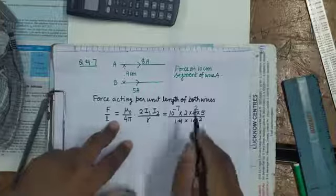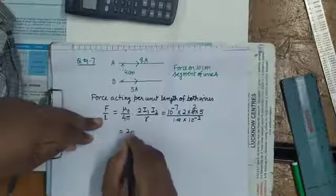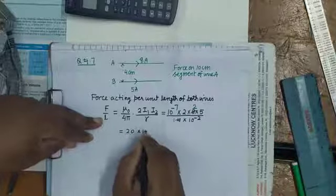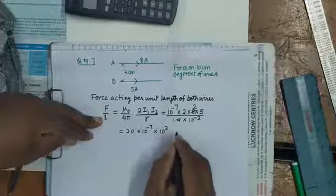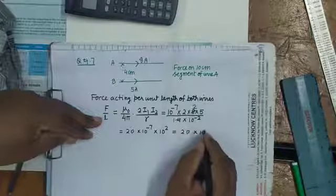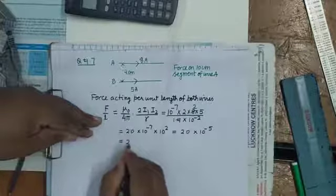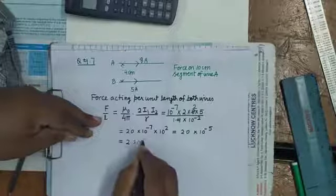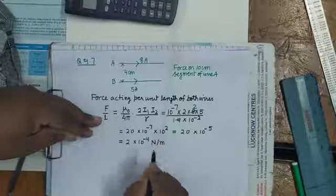It will be equal to 5 times 2 gives 10, 2 times 10 gives 20, times 10 to the power minus 7 times 10 to the power 2, equals 10 to the power minus 5, that is 2 times 10 to the power minus 4 newton per meter.